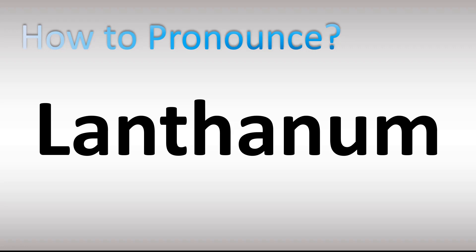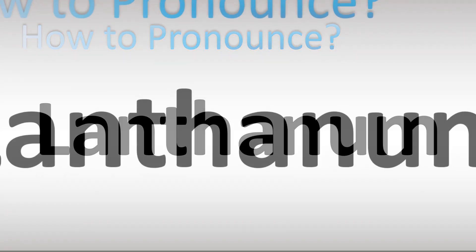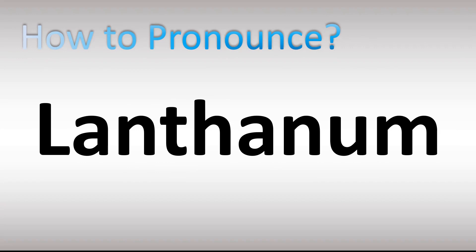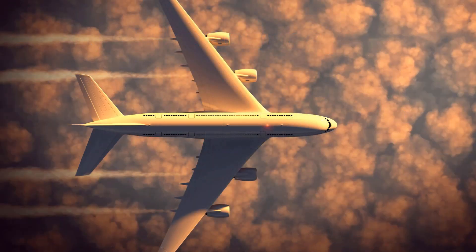How do you pronounce the name of this chemical element, symbol La and atomic number 57? Lanthanum — stress on the first syllable: lan-tha-num. In American English, said more commonly as lanthanum, lanthanum, or lanthanum.